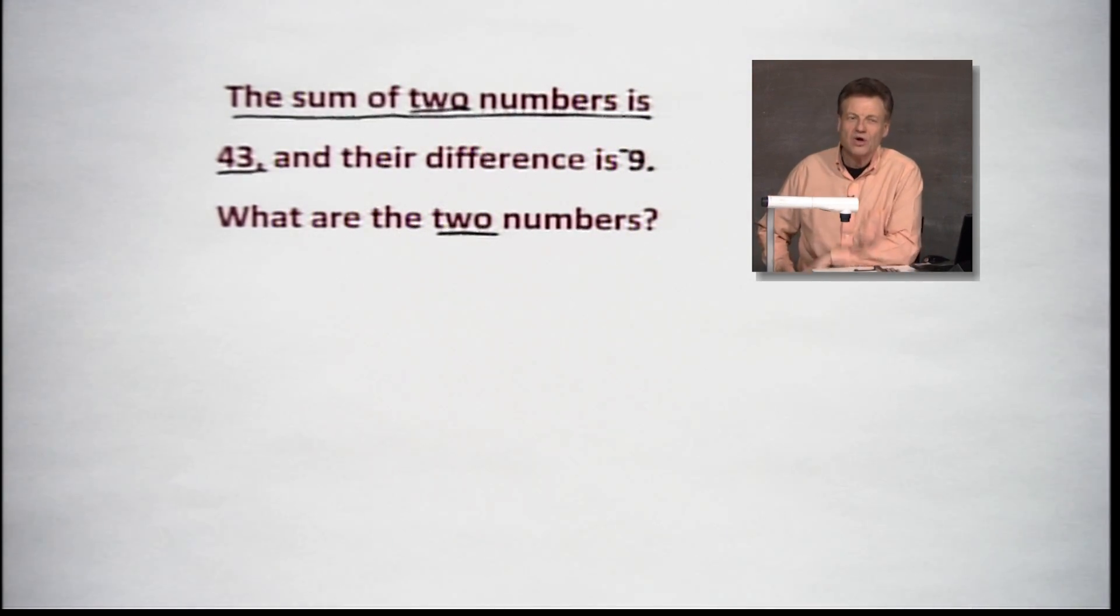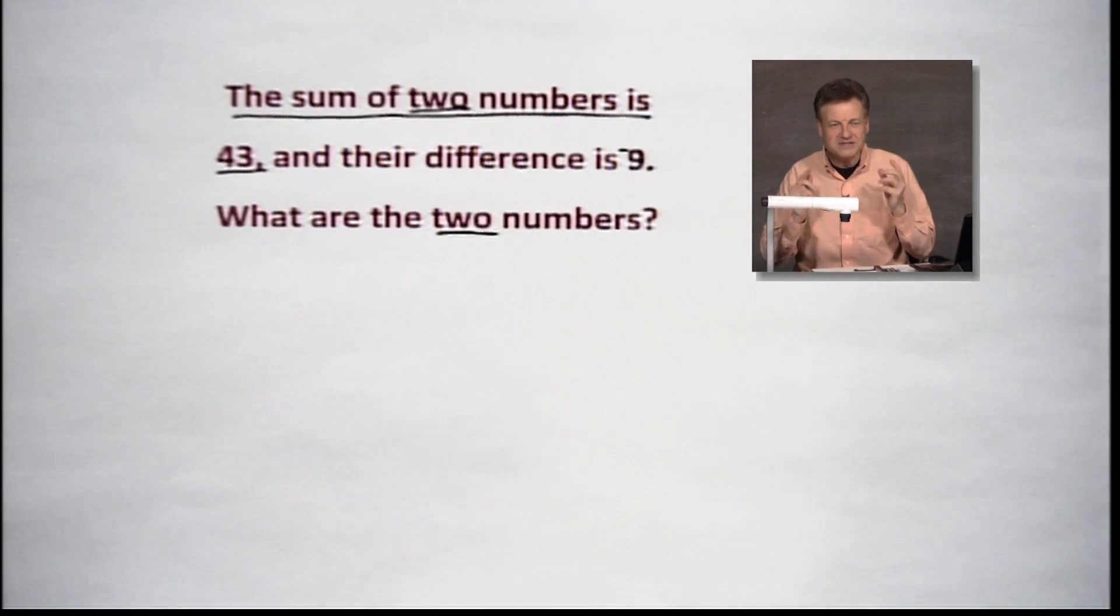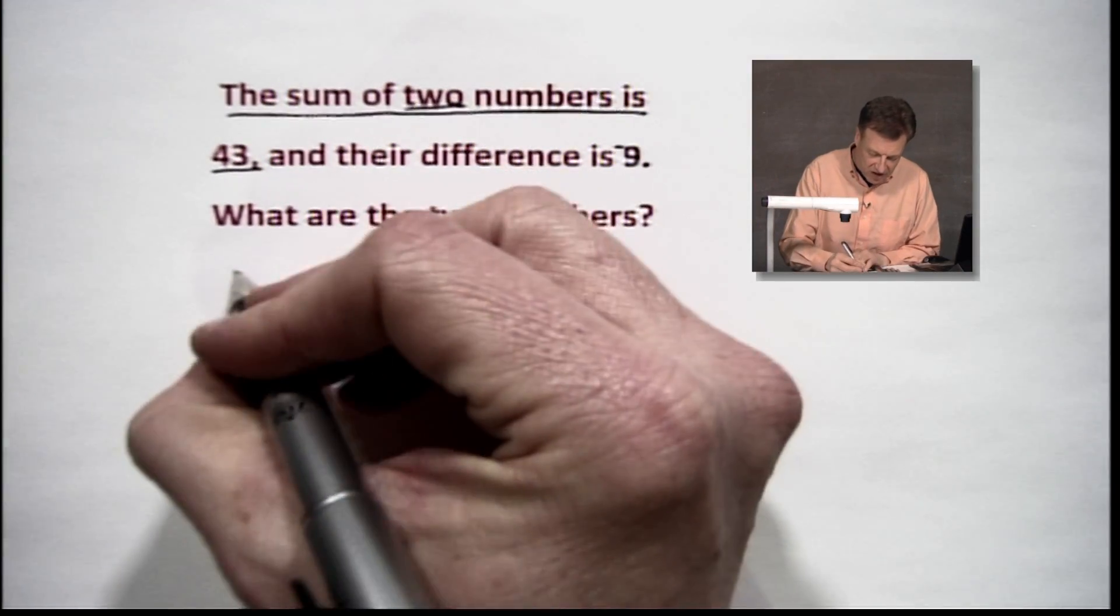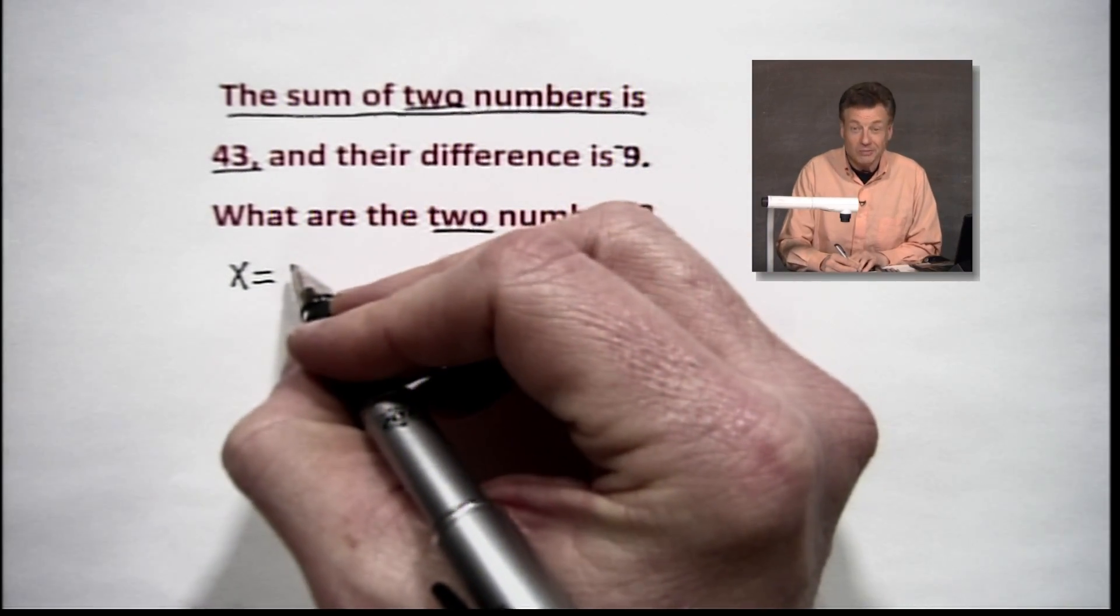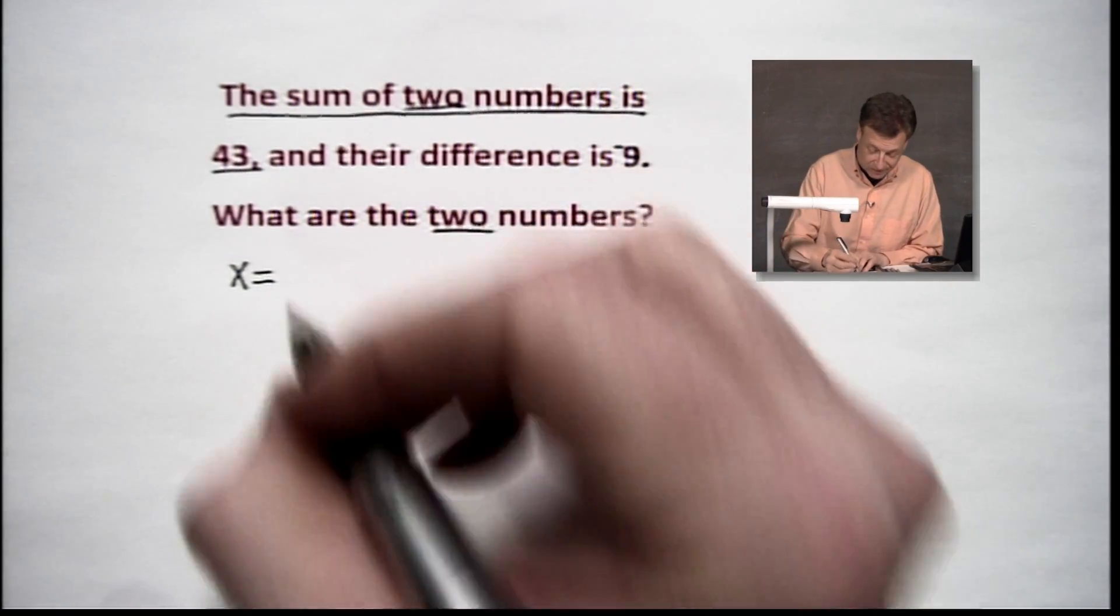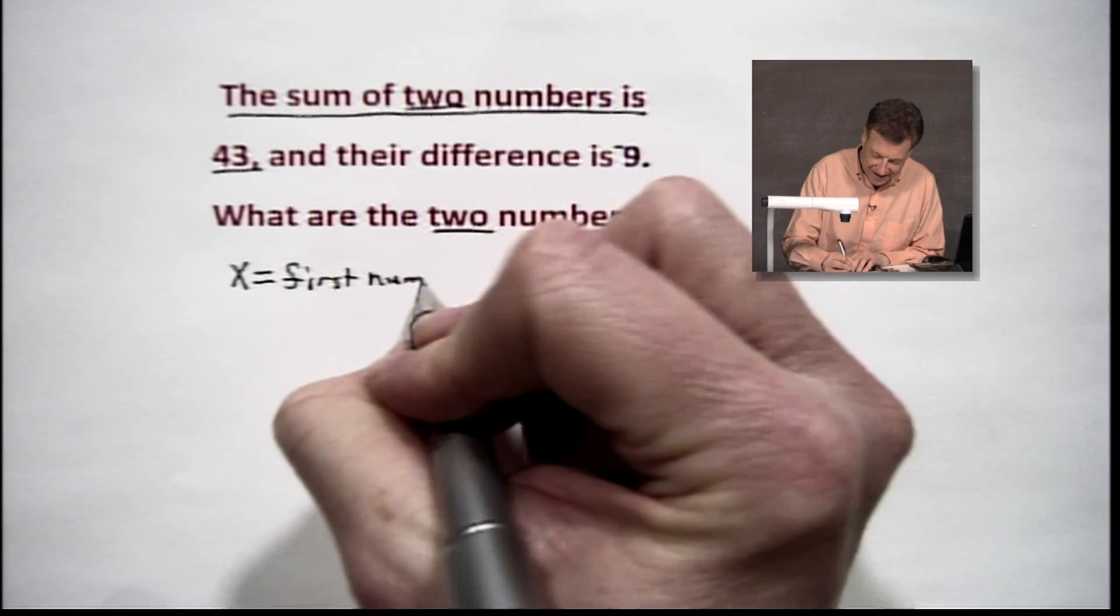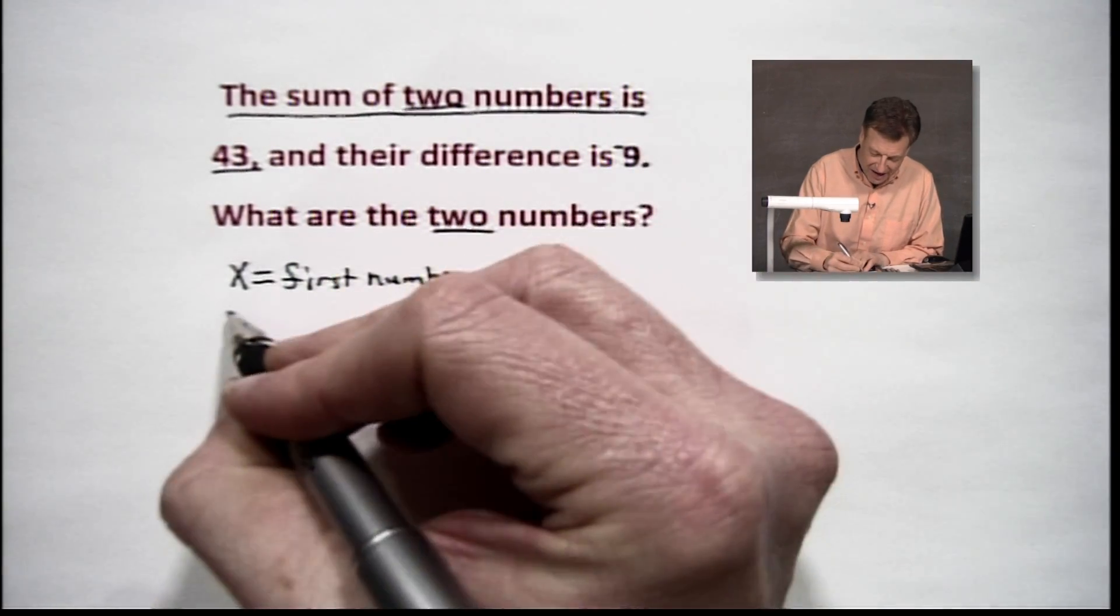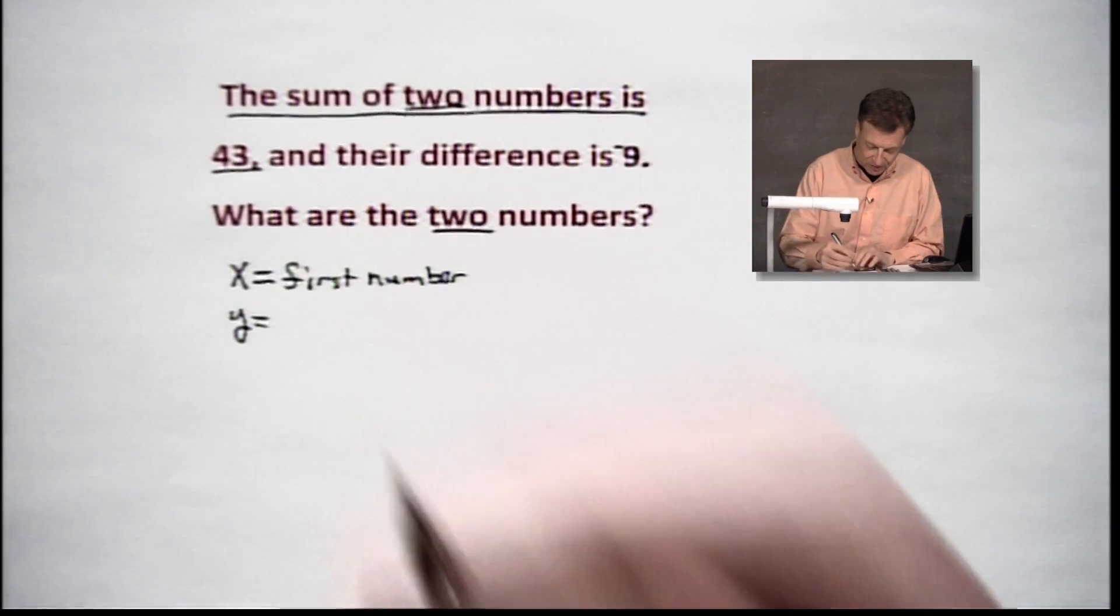So let's see where this is going to take us. Starting off with the first clue, the sum. Sum means addition. Let's go ahead first of all and identify our two numbers. This is going to be real creative, real original. We're going to let X be the first number. You knew I'd tell you that. And we'll let Y, guess what? It's going to be the second number.